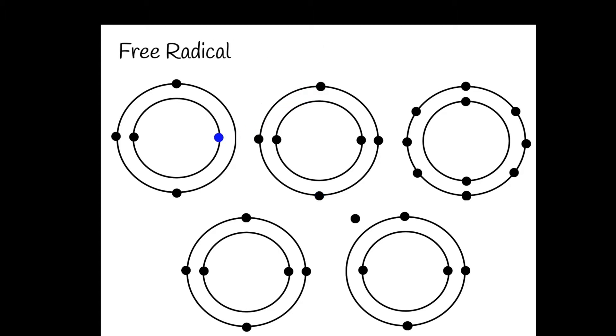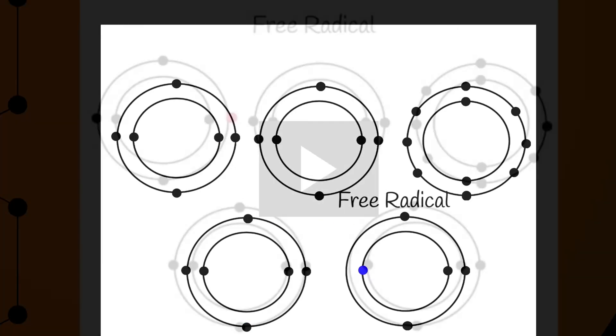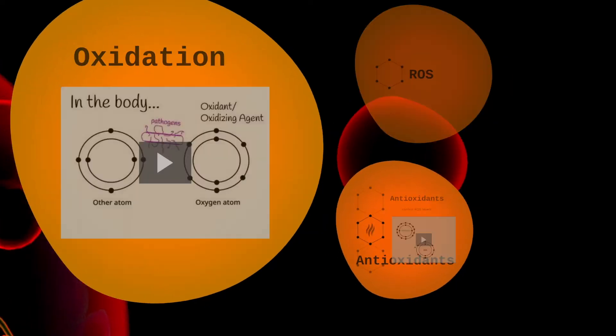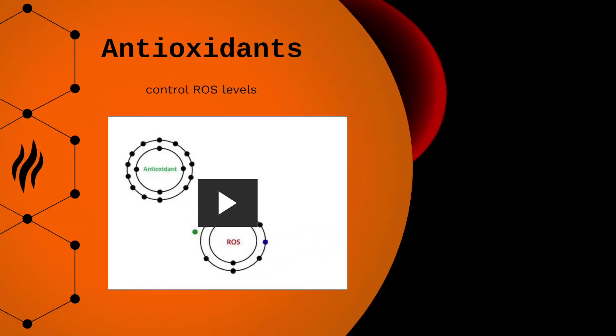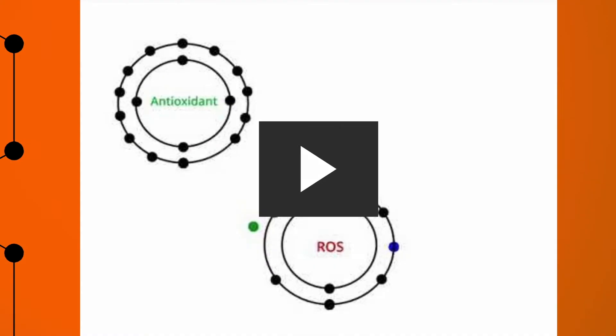So as you can imagine, if this process was not controlled, they could fire a chain of harmful oxidation reactions. Under healthy and normal conditions, antioxidants control ROS levels by eliminating them when necessary.